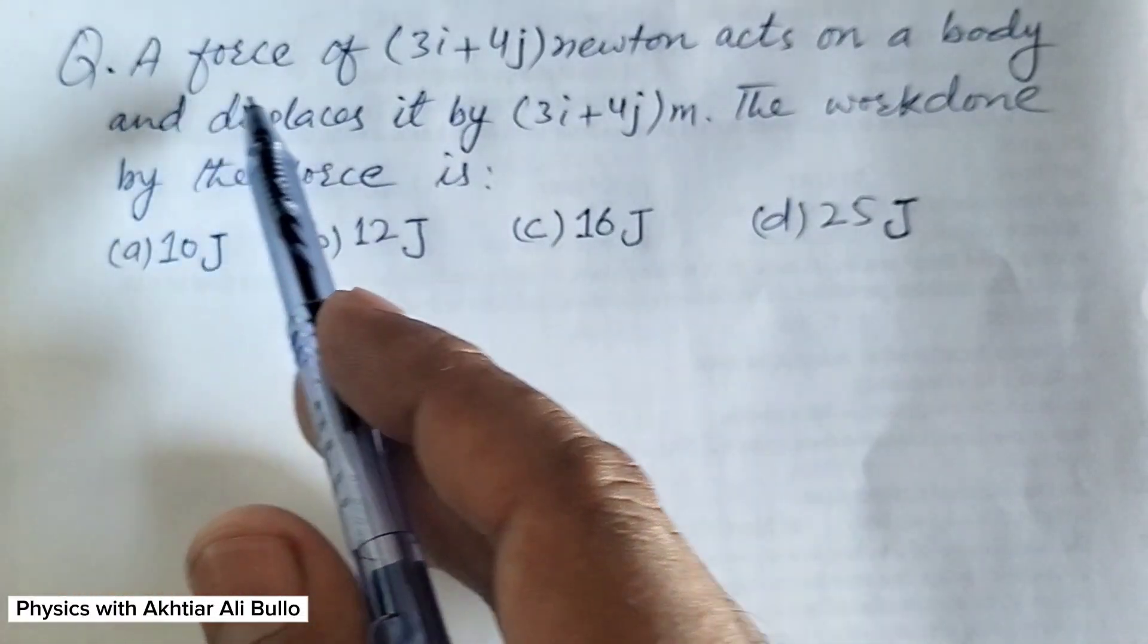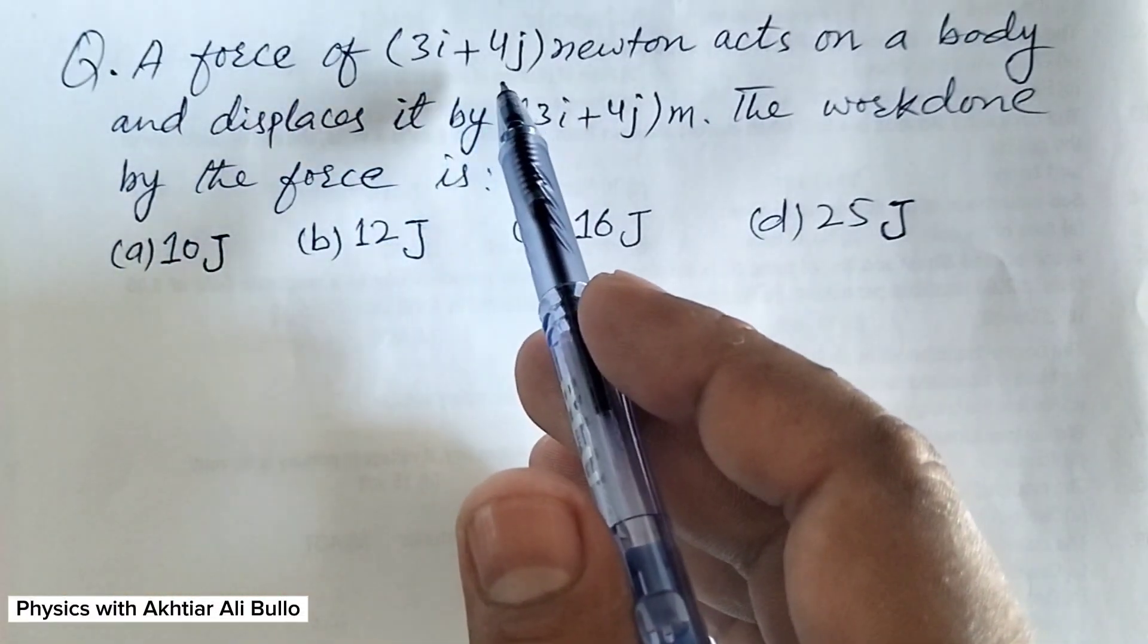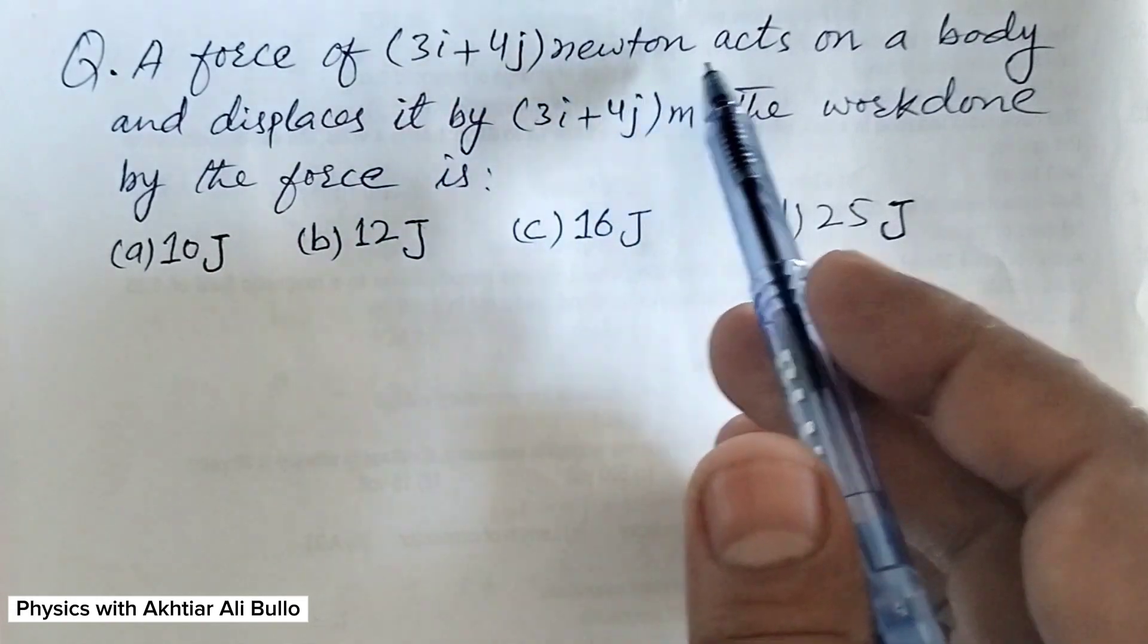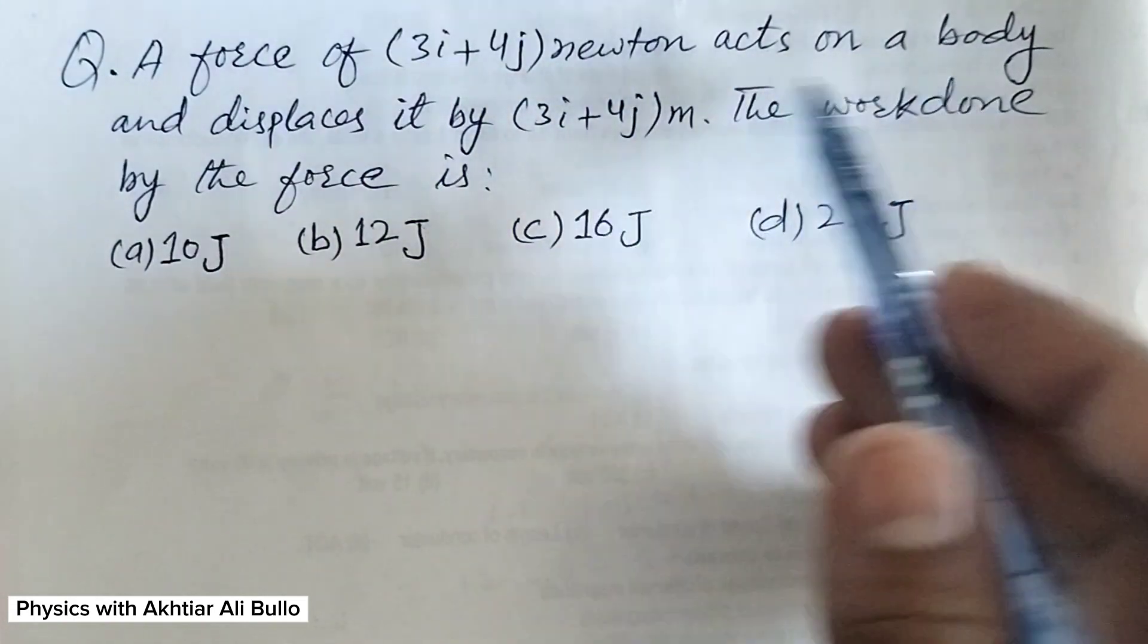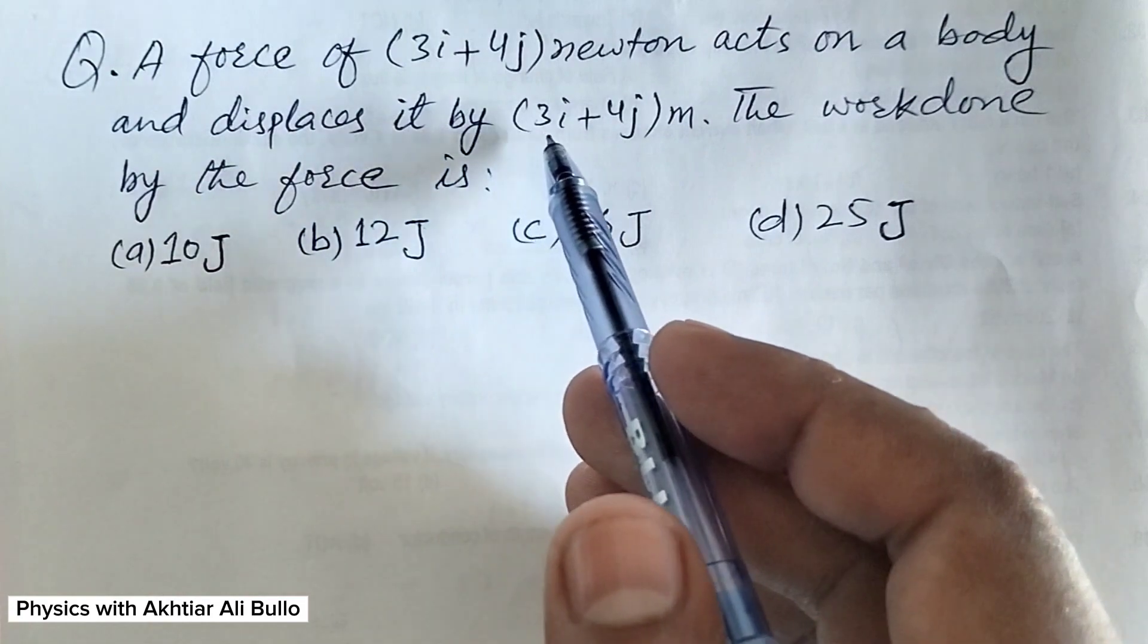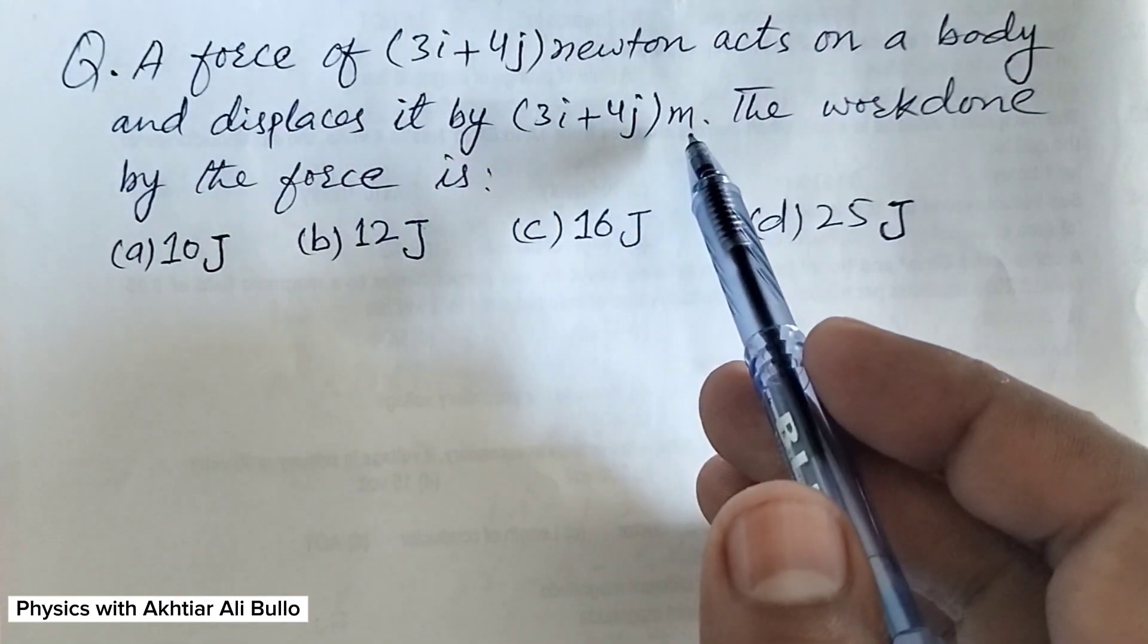The question is: a force of 3i plus 4j Newton acts on a body and displaces it by 3i plus 4j meter.